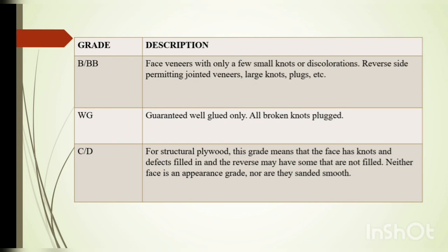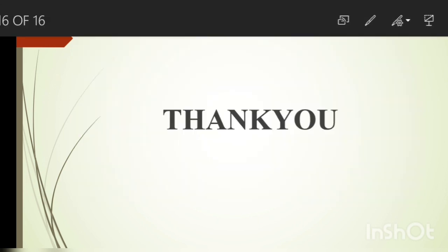WG guarantees well glued only or broken knots. C by D grade for structural plywood means the face has some knots and defects filled in, and the reverse may have some knots that have not been filled. Thank you.